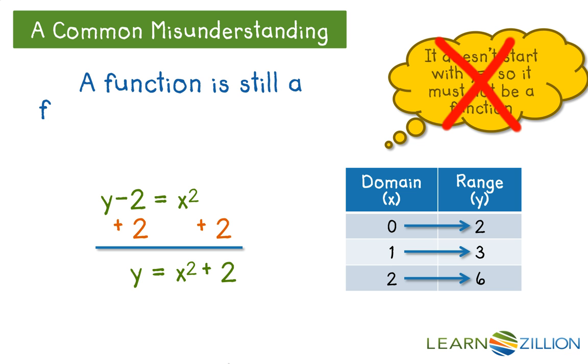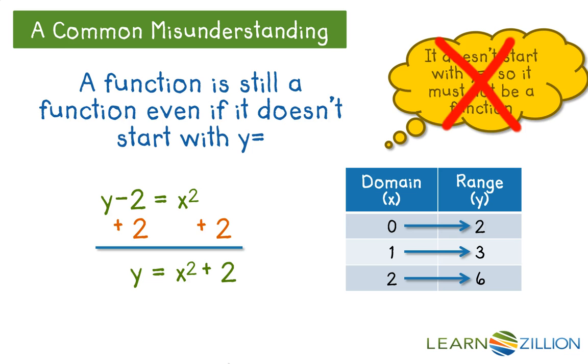Therefore, we can see that y minus 2 equals x squared is a function, because each input only has one output value, despite it being written in an unfamiliar form. Again, because a function is defined by the relationship between the numbers and not the format it's written in.